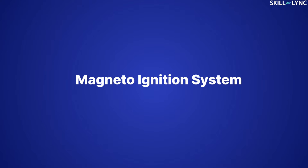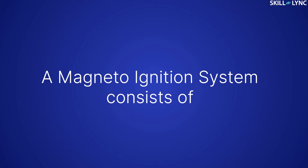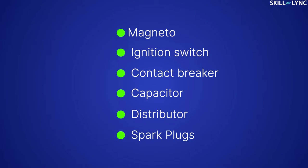The construction and working of the magneto ignition system is almost similar to that of the battery coil ignition system. A magneto ignition system consists of a magneto, an ignition switch, a contact breaker, a capacitor, a distributor and spark plugs.